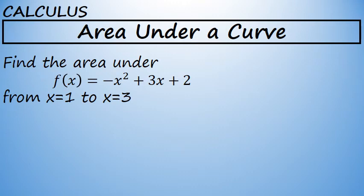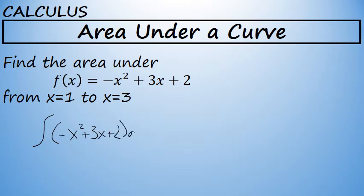To find the area under f of x equals negative x squared plus 3x plus 2, from x equals 1 to x equals 3, an integral can be used. I will be integrating this function, negative x squared plus 3x plus 2, from x equals 1 to x equals 3. This integral will serve to find the area between this curve and the x-axis.